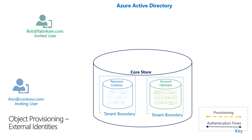In this first scenario, we have Ann from Contoso, and she wants to add Bob to work in Microsoft Teams. He is an employee of Fabricam, which is also an Azure Active Directory tenant. In this context, we call Contoso the resource tenant, because that's where the applications are. And Fabricam is the account tenant, because that's where the external identity is.